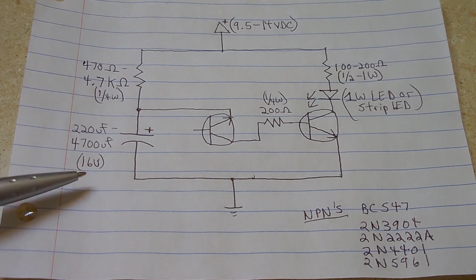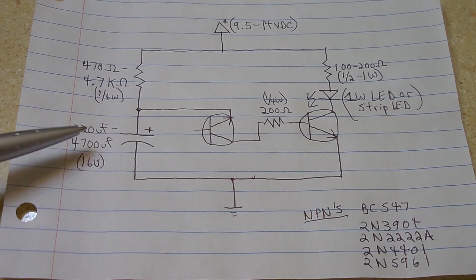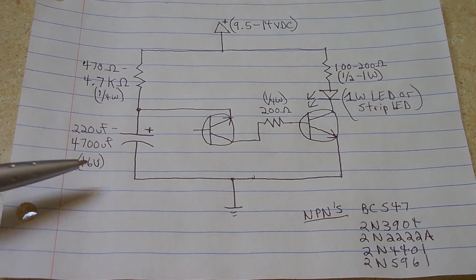Just below that, you have an electrolytic capacitor, rated 16 volts, or 25, either one. And you're going to be using values between 220 microfarad and 4700 microfarad.